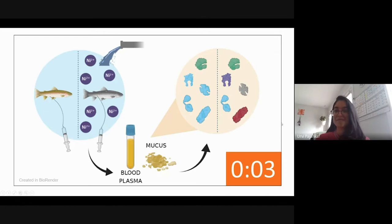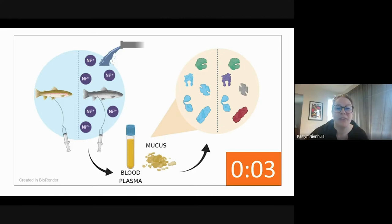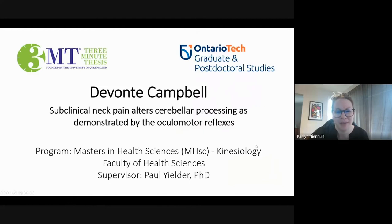Thank you, Urvi. We'll give the judges a few moments for their scorecards. Okay, I'll introduce our next participant, Devonte Campbell, pursuing his Master of Health Science in Kinesiology, presenting subclinical neck pain alters cerebellar processing as demonstrated by disruptions in the ocular motor reflexes. I almost got it. Devonte has played guitar for almost 10 years and draws a lot of inspiration from B.B. King. Devonte is a huge Blue Jays and Raptors fan. His favorite musical artists are J. Cole and Kendrick Lamar. Please welcome Devonte.